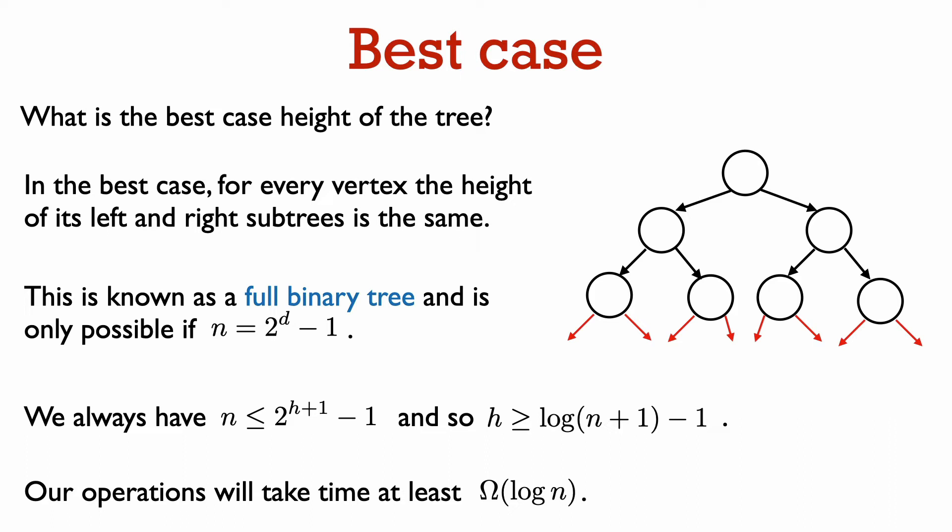This shows that the worst case complexity of our methods, when there are n elements in the tree, will always be at least a constant times log n.